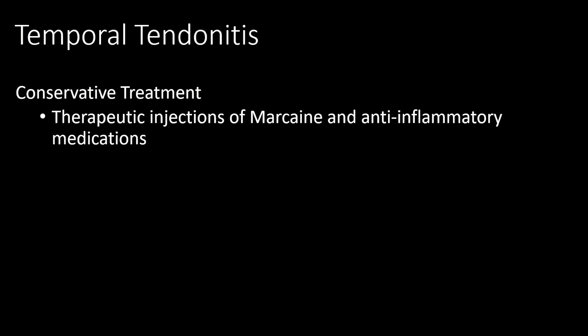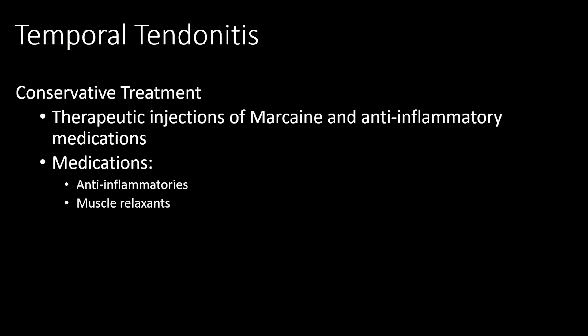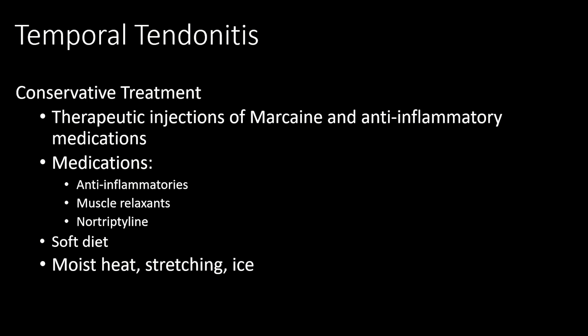There are two ways to treat temporal tendonitis: conservatively and surgically. Conservative treatment involves therapeutic injections of a mixture of marcaine and an anti-inflammatory medication into the coronoid process and temporal tendon. We place patients on anti-inflammatory medications, may use a muscle relaxant to decrease clenching during sleep — nortriptyline is a good one to stop grinding and clenching. We also put them on a soft diet and use moist heat along with certain stretching exercises.